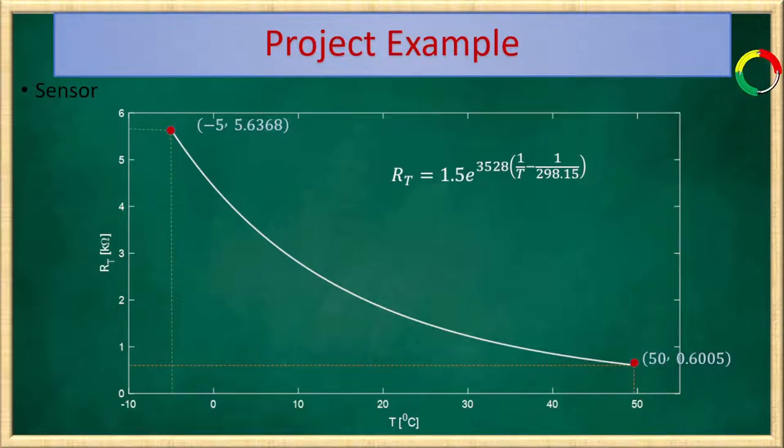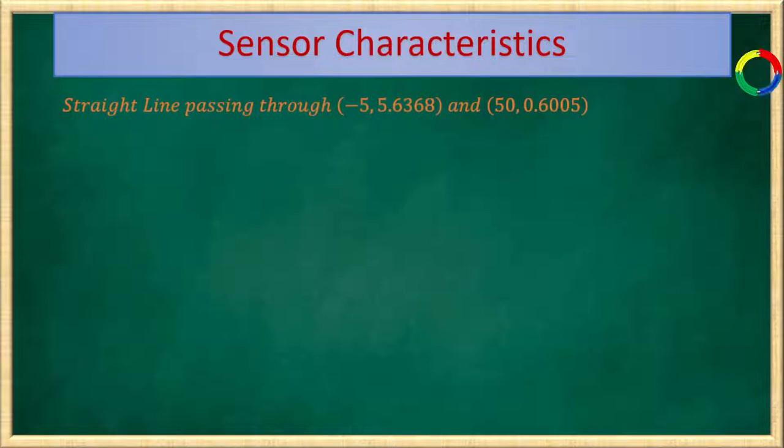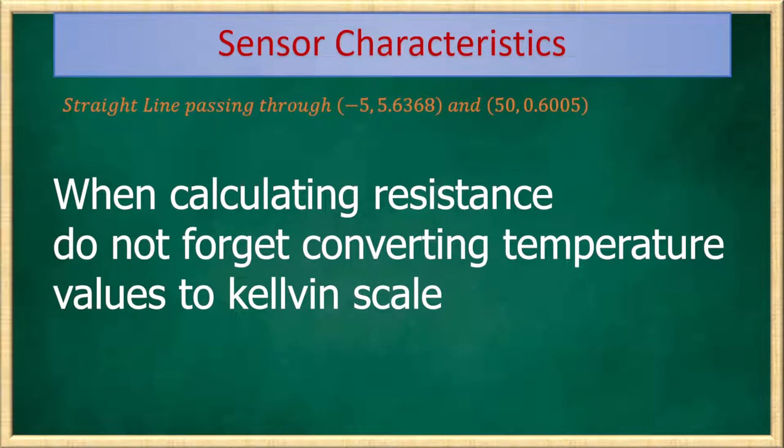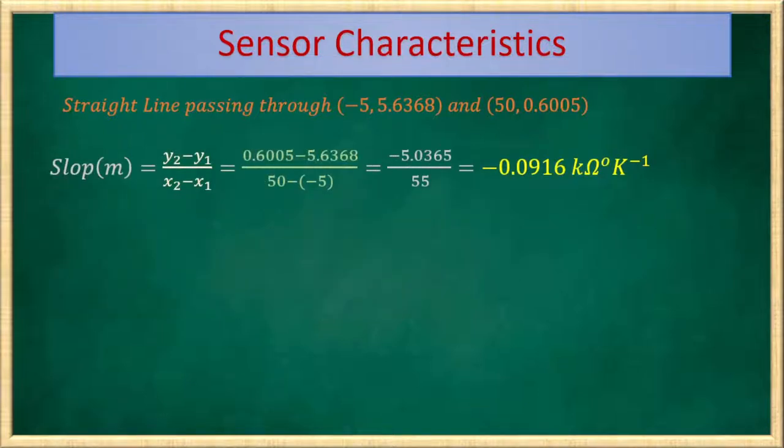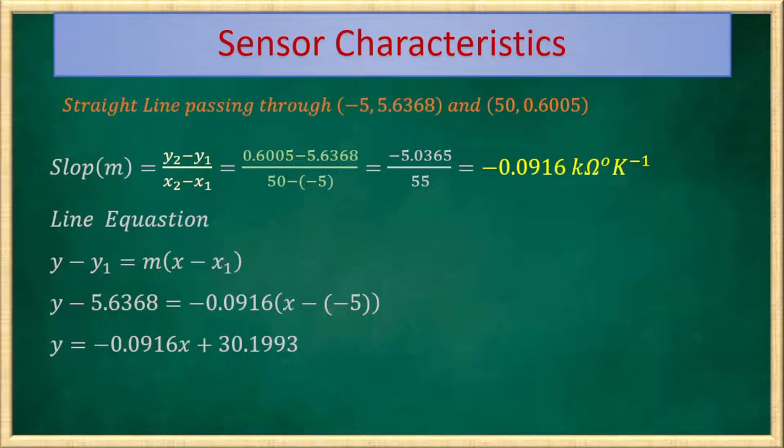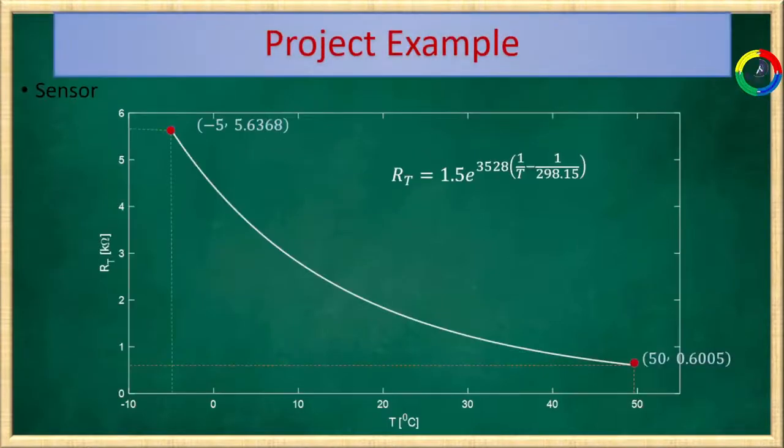The ideal straight line can be drawn by connecting those two points. Let's find the straight line passing through minus 5 degree centigrade and 5.6368 kilo ohm and 50 degree centigrade and 0.6005 kilo ohm. Let's find the slope m equals y2 minus y1 over x2 minus x1 which equals minus 0.0916 kilo ohm per degree Kelvin. By using this slope and taking one of the points, we can find the straight line equation as y equals minus 0.0916 x plus 30.1993. In our case, y is the resistance RT and x is the temperature T. So this is our equation. Therefore, this is a straight line and its corresponding equation is this one.